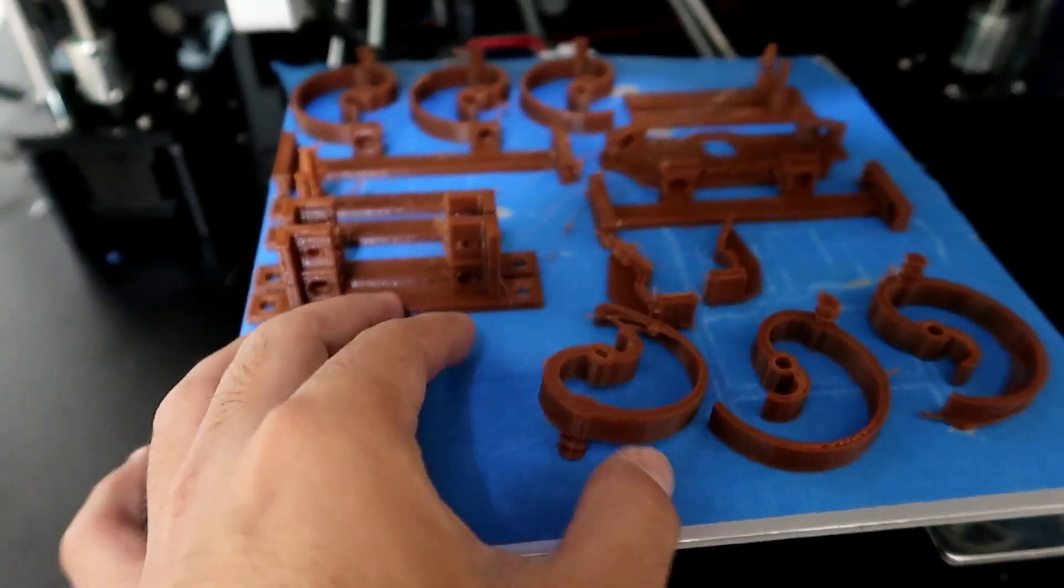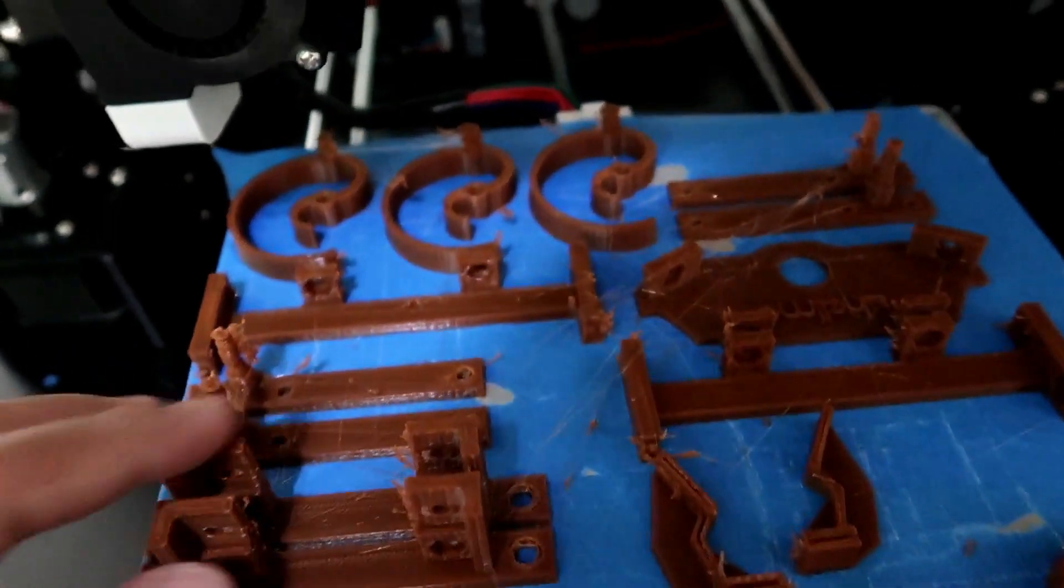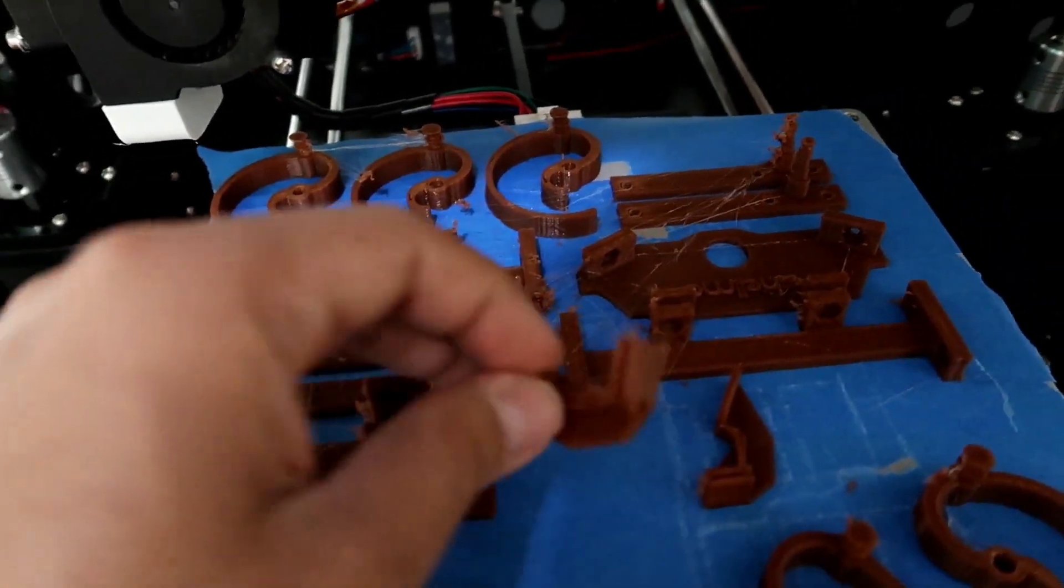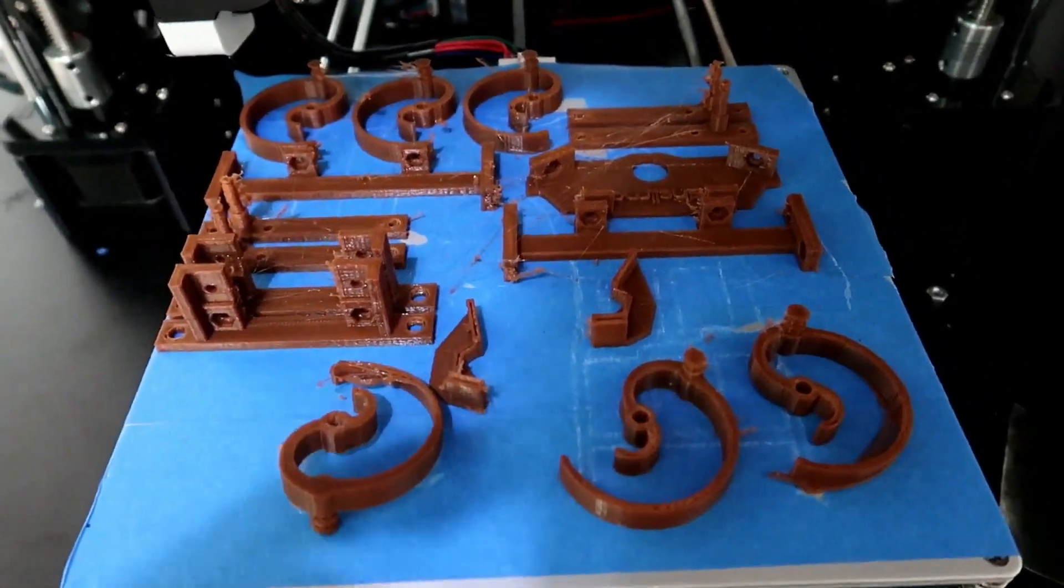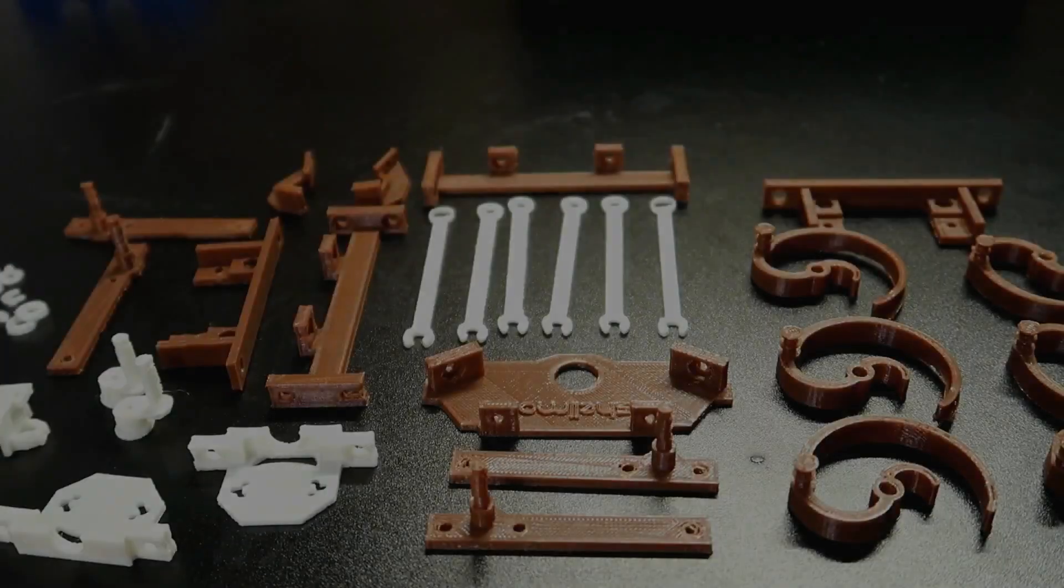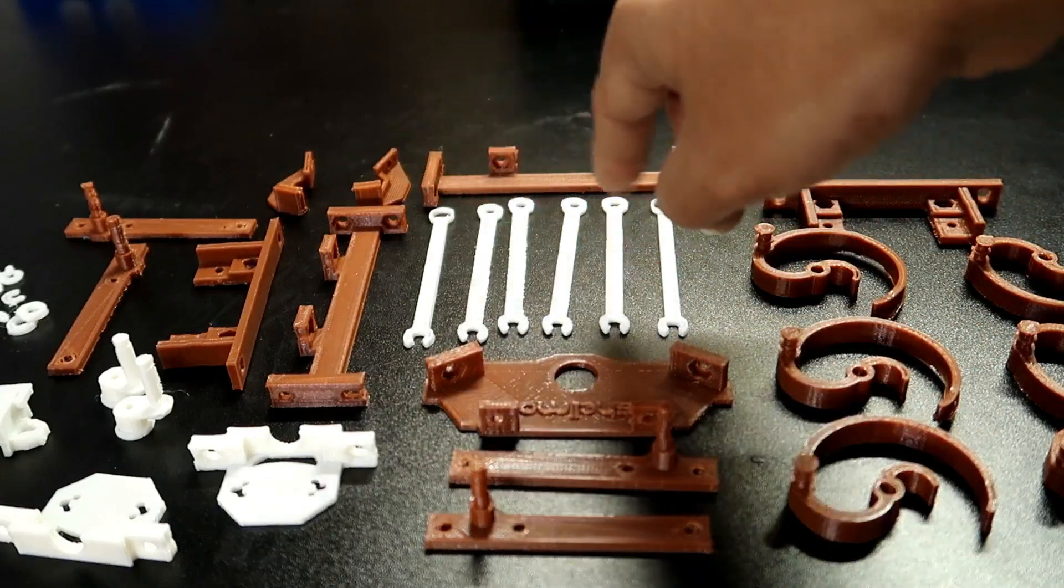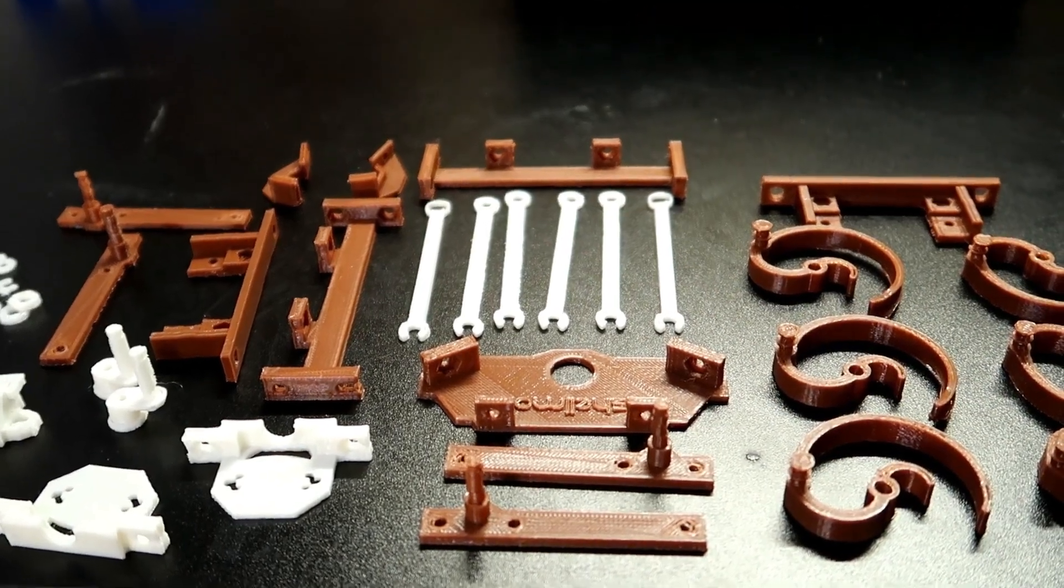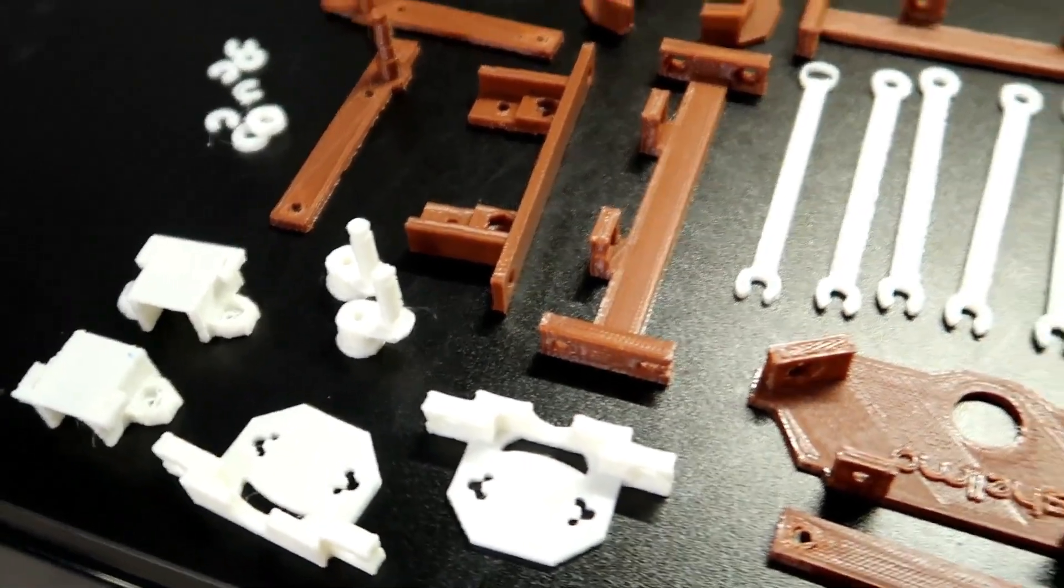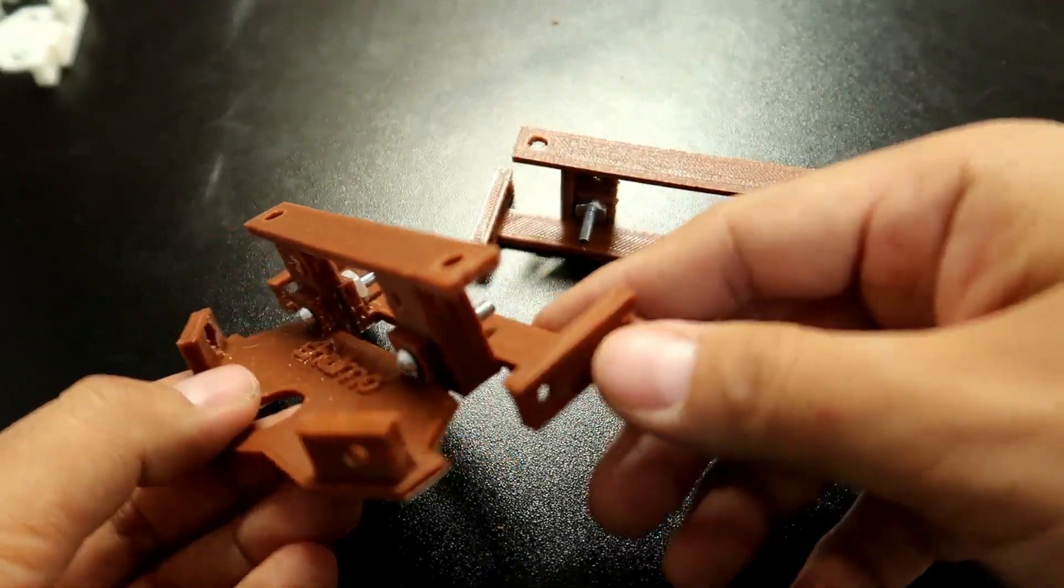Ya he impreso la primera parte chicos, lo que son las llantas. Todas estas partes son como unas pinzas. Vamos a imprimir la segunda parte de otro color. Ya he impreso todos nuestros materiales, aquí están de color blanco algunas partes para que contrasten lo que van a ser las llantas. Voy a mover la cámara para que vean con qué calidad las imprimí, están súper padres. Vamos a comenzar a armar este súper proyecto.